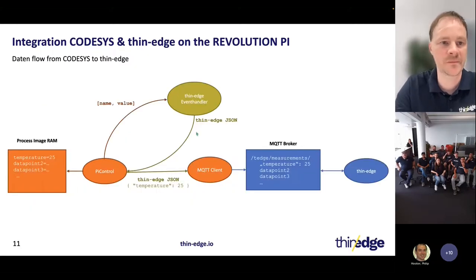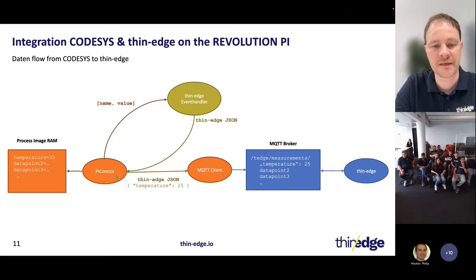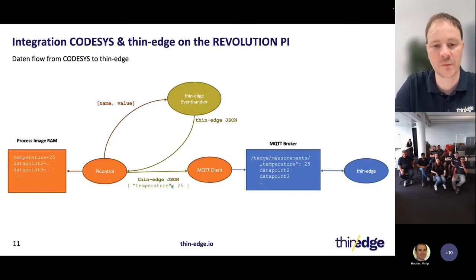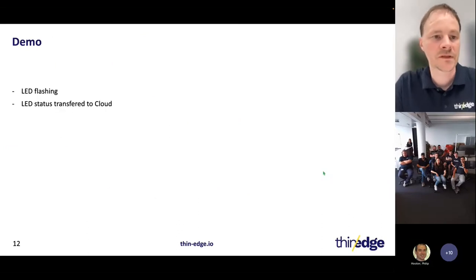The MQTT client takes that JSON string and sends it to the broker. In the data flow chart, on the very left side you can see the process image with example data — for example, temperature with value 25. Pi control accesses the process image, and on a change it sends the name and value to the event handler. The event handler returns the corresponding JSON string, and then pi control uses the MQTT client to publish that value — here temperature with value 25 — to the measurements topic. Thin edge then takes care of sending that to the cloud.